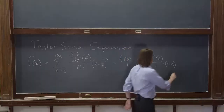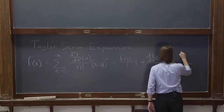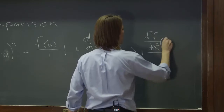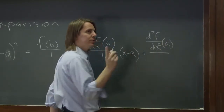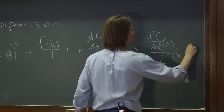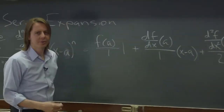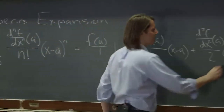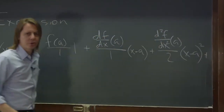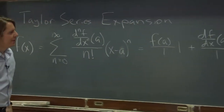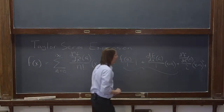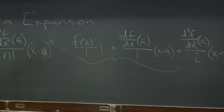You could keep going. Next would be the second derivative d²f/dx² evaluated at a, over 2 factorial (which is 2), times x minus a squared — now you have an x squared term. And you could keep going with plus dot dot dot, on forever. So now maybe you're starting to see how we can use this to make something linear: just keep those first two terms.